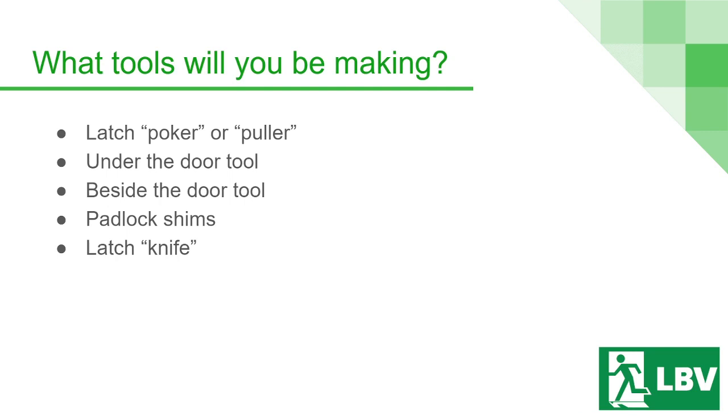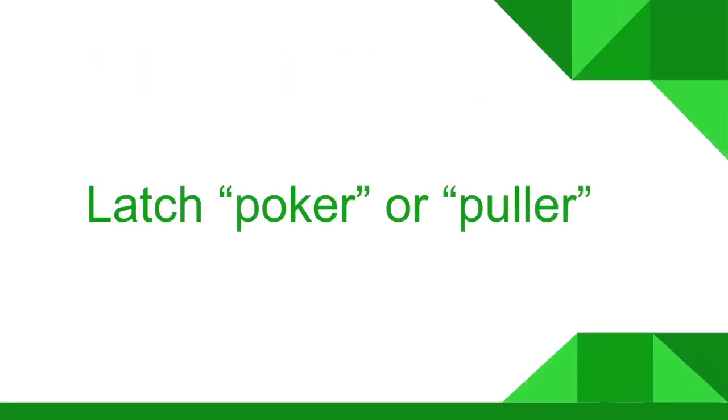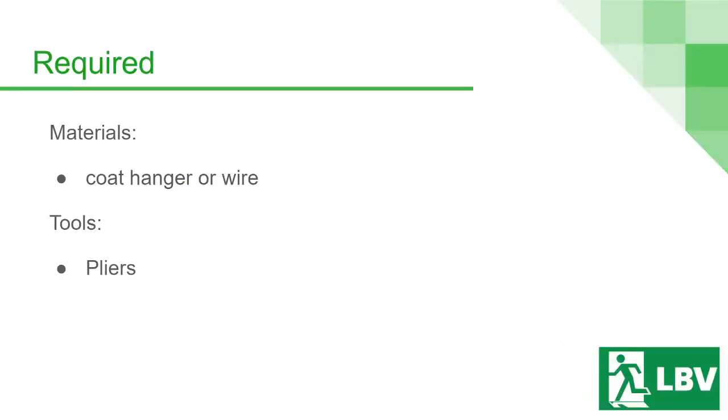Today we'll be showing you how to make five different types of tools: the latch poker or puller, the under the door tool, the beside the door tool, padlock shims, and the latch knife. First off, we'll be teaching you how to make the latch poker or puller. The materials required for this is a single coat hanger or a piece of wire. You will also need a pair of pliers.